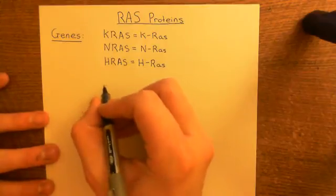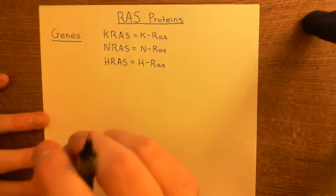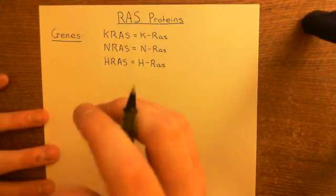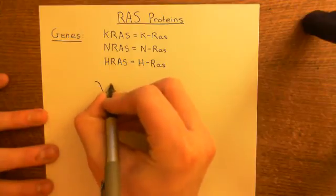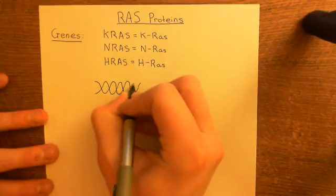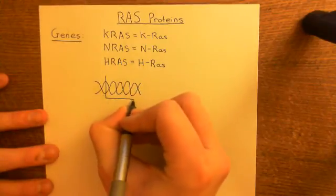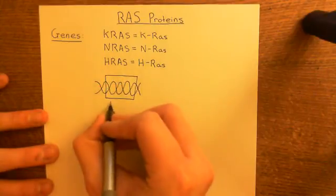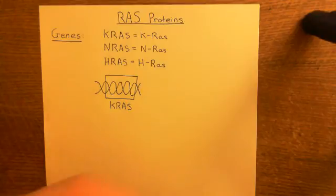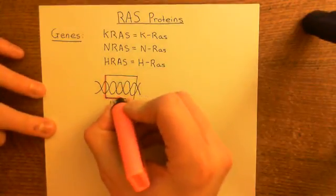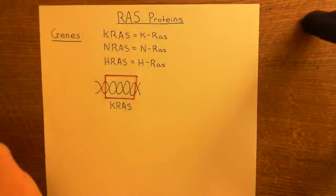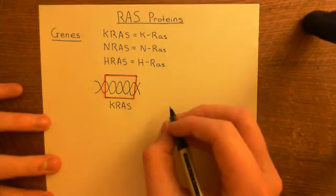Let me remind you of the central dogma of biology, because it's going to become important if we want to understand why there are four RAS proteins and only three RAS genes. It's the KRAS gene which is capable of producing two different proteins, while NRAS and HRAS only produce one protein each. The KRAS gene is transcribed into a piece of mRNA, which will then be spliced into a mature piece of mRNA and translated into the KRAS protein.